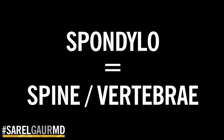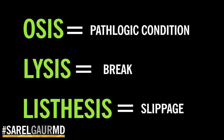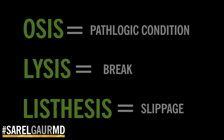Where do we start? I start with the root word, spondylo. Spondylo means spine or vertebrae. The other portions of the words: we have spondylosis — osus means pathologic condition. We have spondylolysis, with lysis meaning break, crack, or fracture. We have spondylolisthesis, with listhesis meaning slippage.